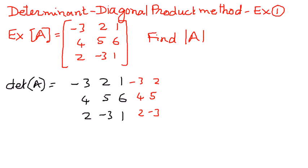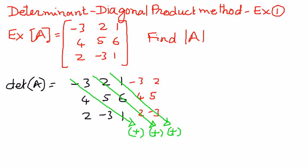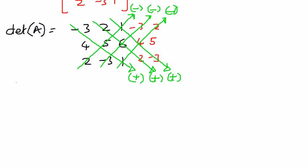Now we're going to connect the diagonals by a line and then multiply them. We connect elements along the diagonals and multiply them out. When we go down the diagonals we add those products, and on the other side we go up the diagonals and subtract. When we go down the diagonal we add; when we go up the diagonal we subtract. Now let us perform this operation.